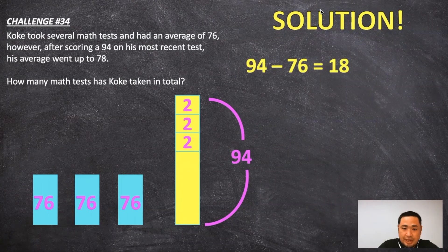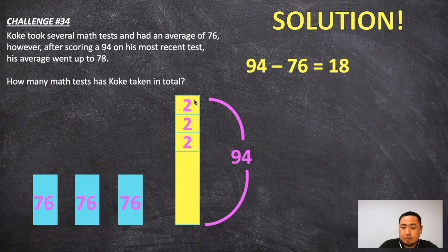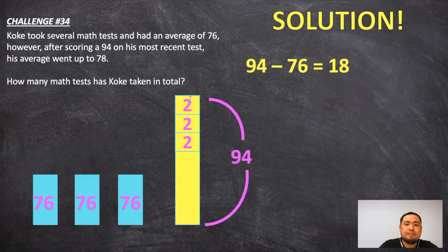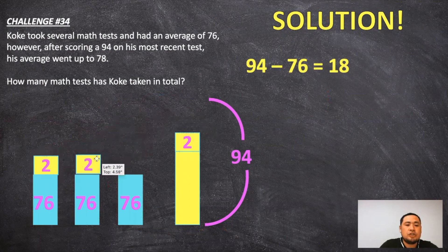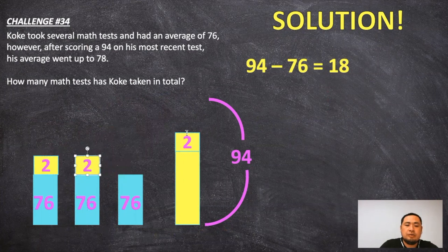So now that we know that each box is worth two points, we can then distribute this two into the old average and say that our new average is equal to 78 points.